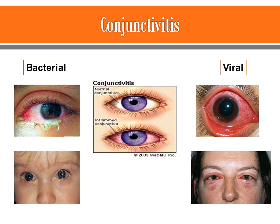Here are a couple of pictures of conjunctivitis. On the left you can see bacterial conjunctivitis with the purulent exudate draining, the crusting that's occurring, and that it is bilateral. With the viral picture, you can see the injected conjunctiva and sclera, as well as the redness and periorbital edema.